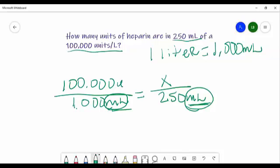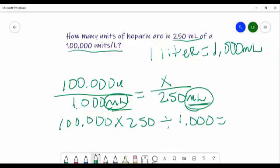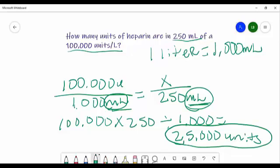Got it? You got 100,000 units times 250. So you're going to do 100,000 times 250 divided by 1000, and let's see what our answer is: 25,000 units. So the question was, how many units of heparin are in 250 milliliters of 100,000 units? 25,000. Okay, so you just solved for X. X is 25,000 units. Got it? That shouldn't be too hard to get to either.